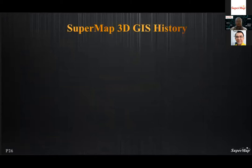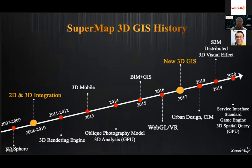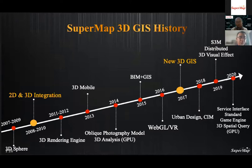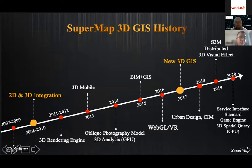With the continuous development of GIS technology, computer technology, computer graphics, virtual reality, and surveying technology, 3D GIS has gradually become one of the mainstream directions of GIS research. SuperMap has spent more than 10 years on the road of 3D GIS research and innovation. In 2009, a 2D and 3D integration GIS project was first proposed and released. Many technical problems have been overcome since then, and in 2017, a brand new 3D GIS research system was proposed for the first time.